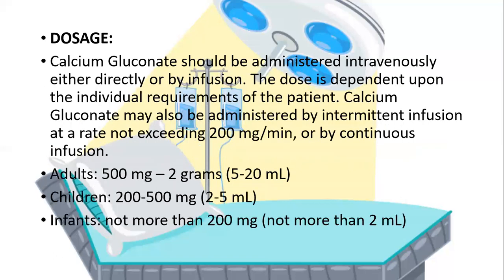Now, moving on to dosage — how much of the drug we are to give to the patient. Calcium gluconate should be administered IV, either directly or by infusion. It can be given directly to the patient or in the form of infusion, which could be intermittent or continuous.